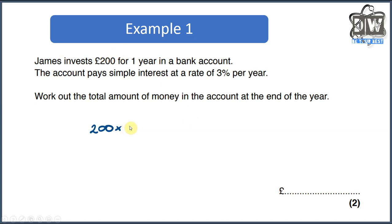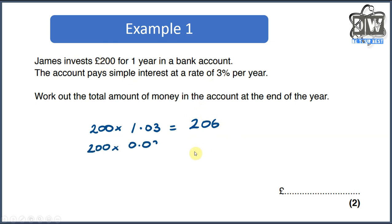We've got our £200 and we're going to multiply it by 1.03, because that is 103 percent as a decimal. If we put that into our calculators and press equals we'll end up with £206. That makes sense because three percent of 200 is six pounds, and all we would do is take our £200 and add the six pounds to get £206. So you can see how I've done it both ways.